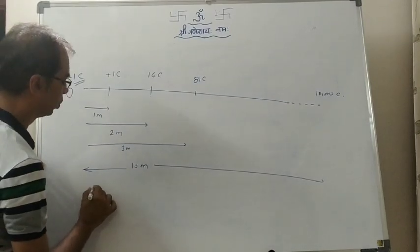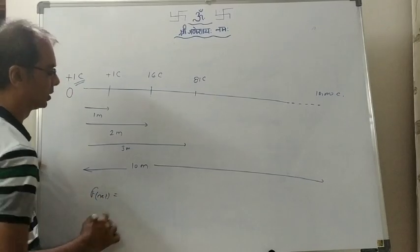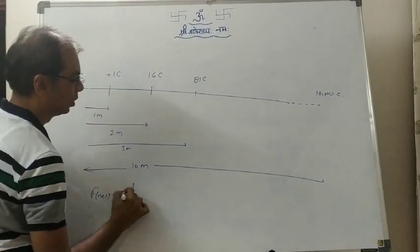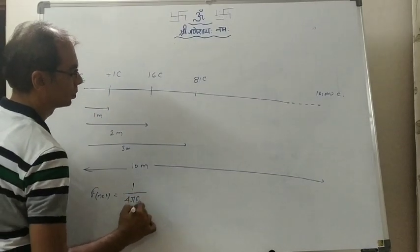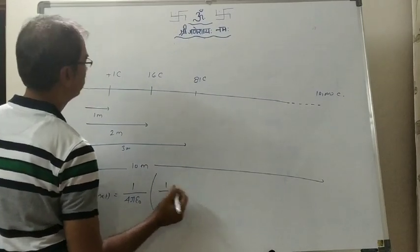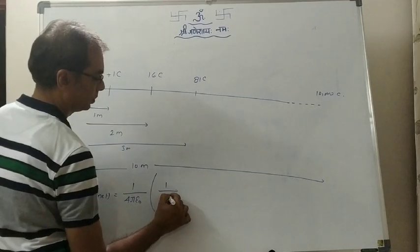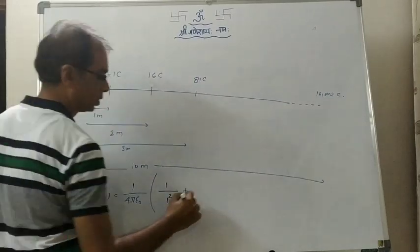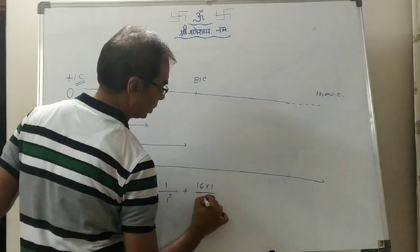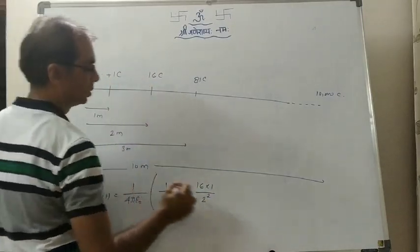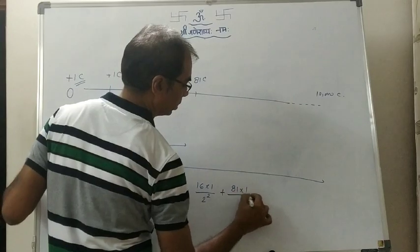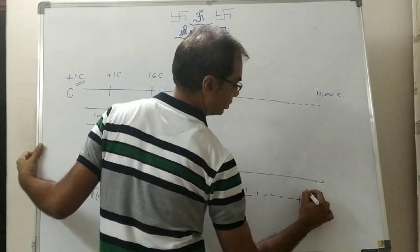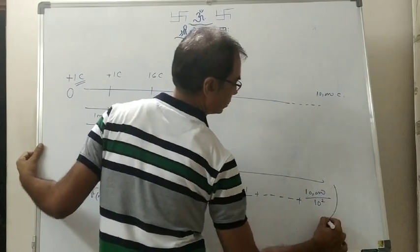So what we can write as net force — I am writing directly because we have done the similar question last time. The force of plus one coulomb on this plus one coulomb: 1 by 4πε₀, 1 coulomb into 1 coulomb by 1 meter square. Plus the 16 coulomb charge: 16 into 1 by 2 square. Then 81 into 1 by 3 square, and so on. The final one: 10,000 by 10 square.